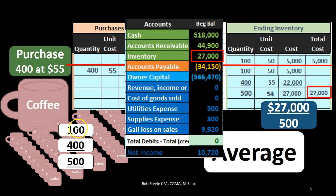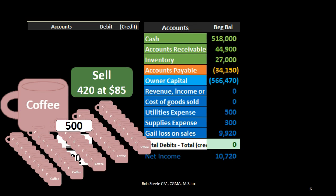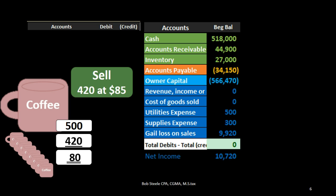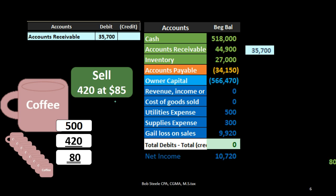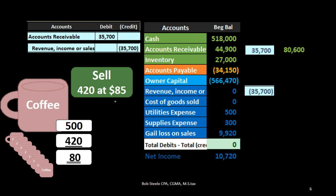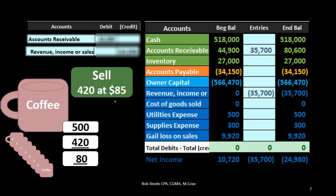Now let's record our transactions for a sale. We have a sale of 420 units at $85. In terms of units, 500 minus 420 gives us 80 units left over. The sale has two separate journal entries. The first half is straightforward because the sales price has nothing to do with the cost worksheet. If you see a sale at $85 — the sticker price — it doesn't affect the cost we've been tracking. The first entry is a debit to accounts receivable and a credit to revenue for $35,700 (420 times $85).